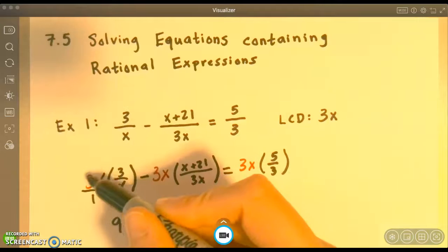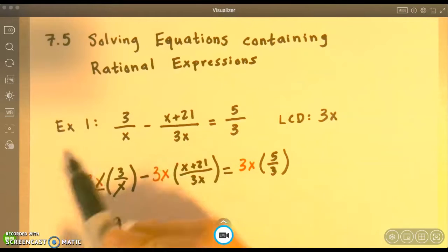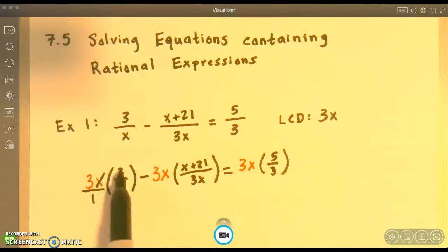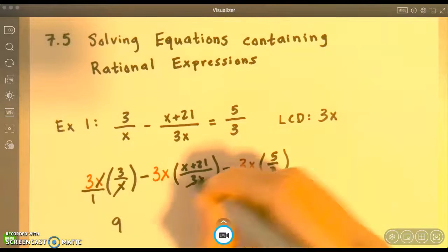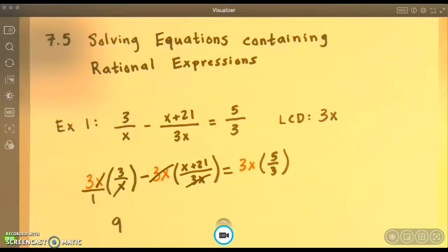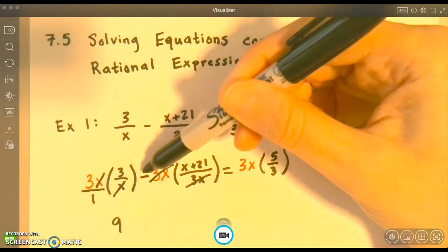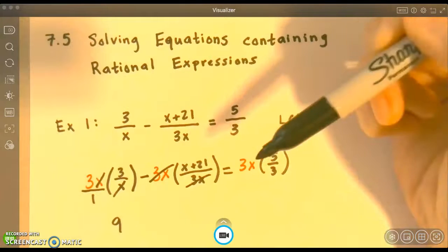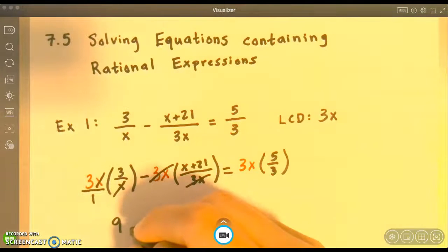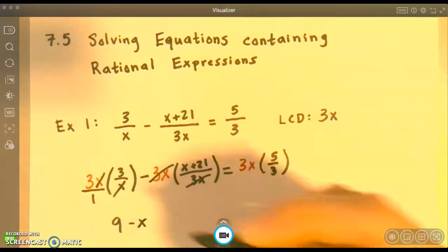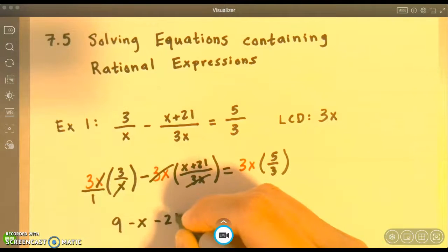So that's why these cross-cancel. When I multiply, I'm left with 3 times 3, which is 9 over 1, which is just 9. Here, the 3x's completely cancel, but be careful because there is a negative, so we're going to distribute that negative. We get -x - 21.